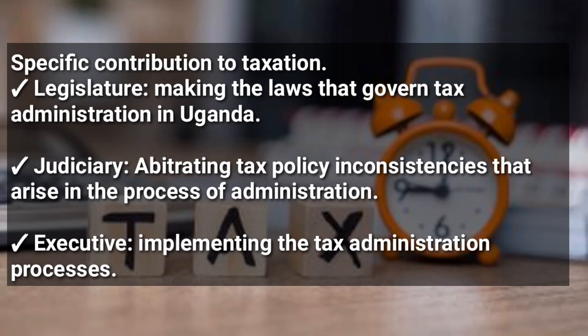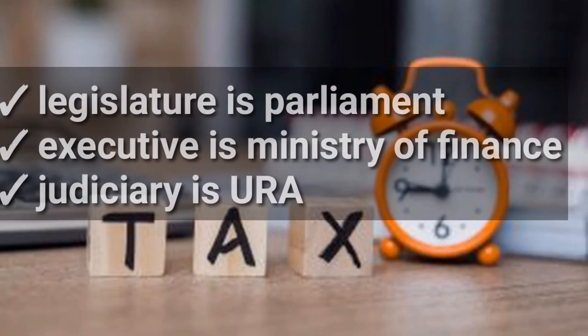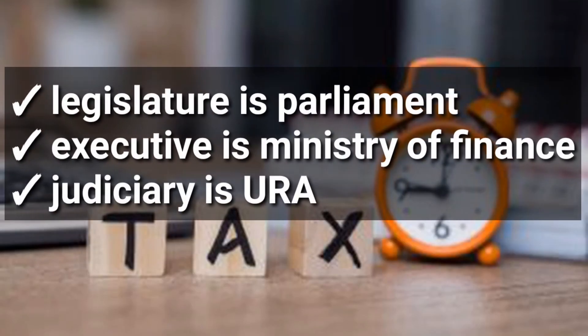So taxation in Uganda is mainly structured around three arms: the legislature, which is the Parliament of Uganda; the executive, which is the Ministry of Finance Planning and Economic Development; and the judiciary, which is the Uganda Revenue Authority.